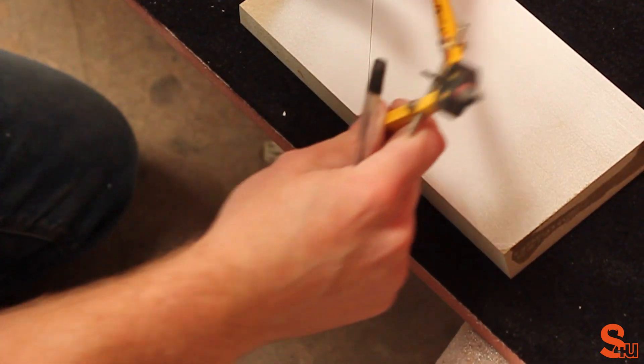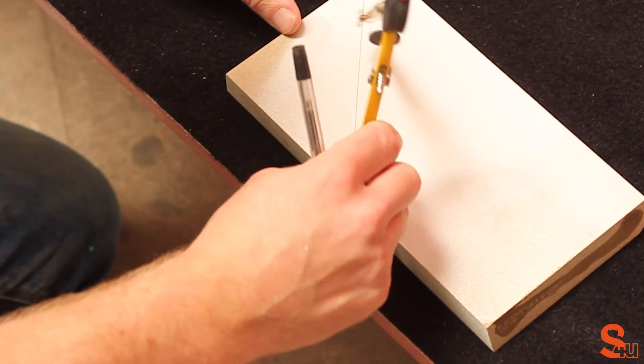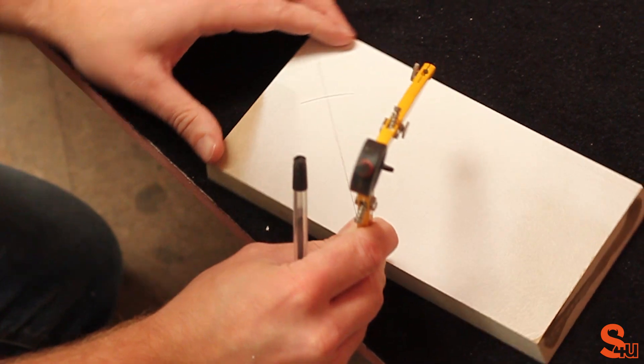Next, grab your compass and halfway up mark an arc on each line.